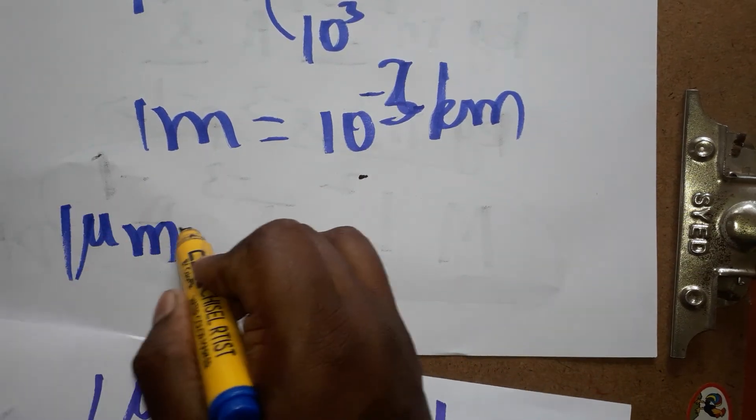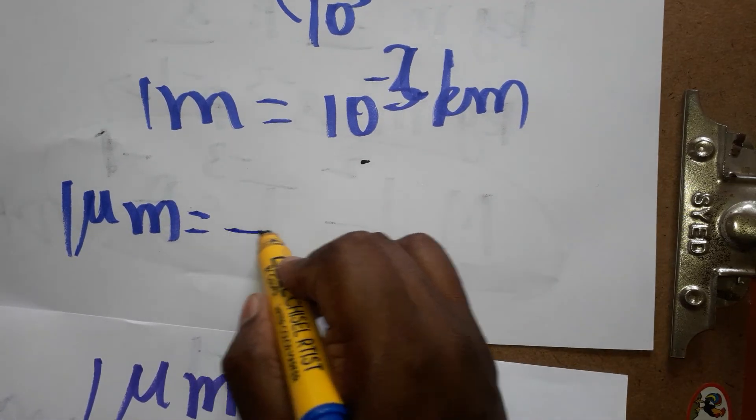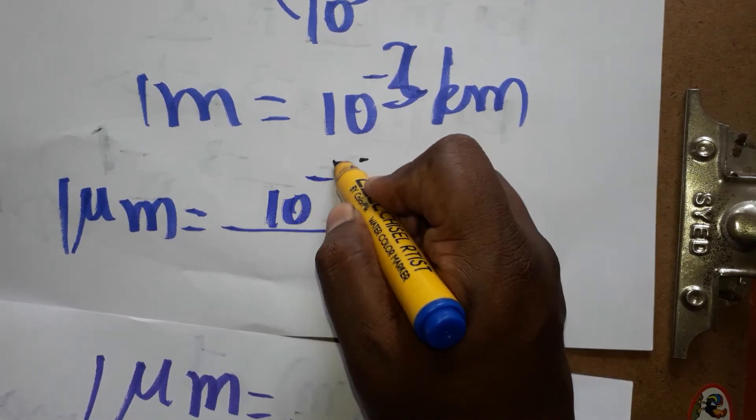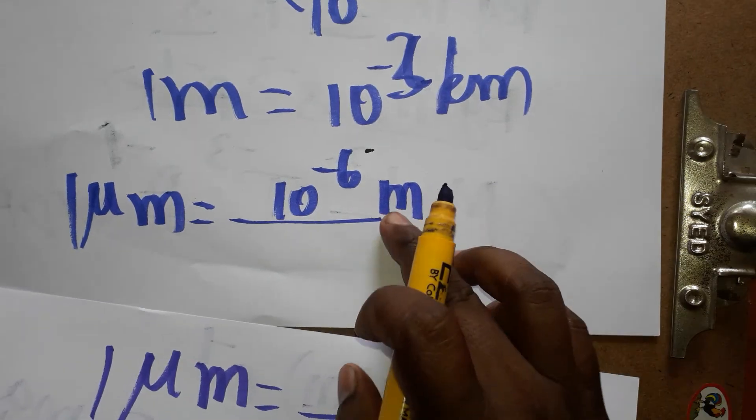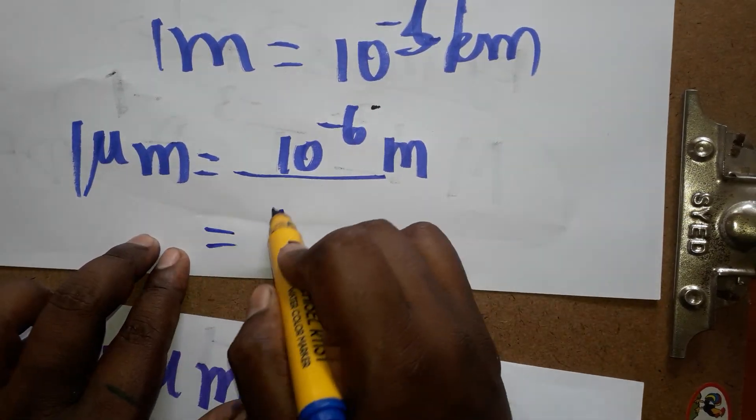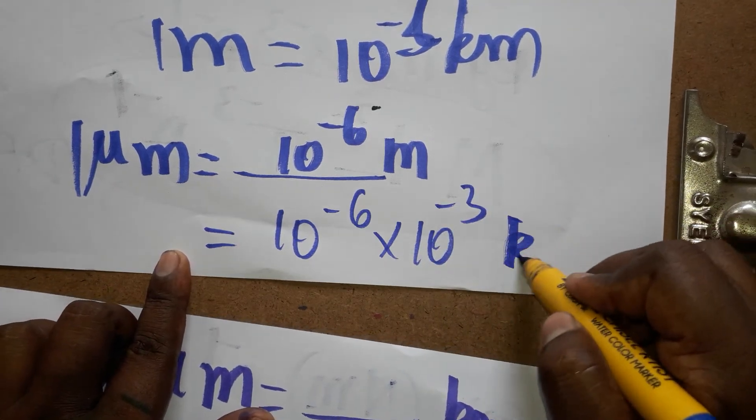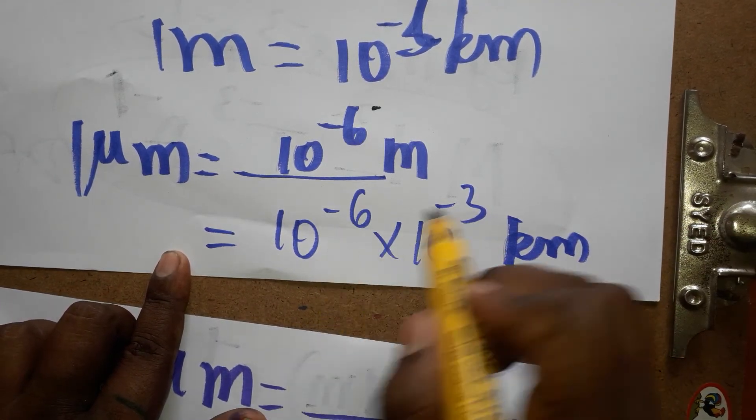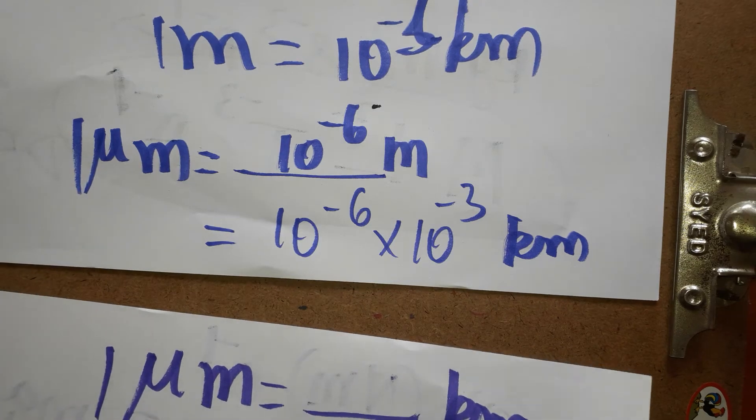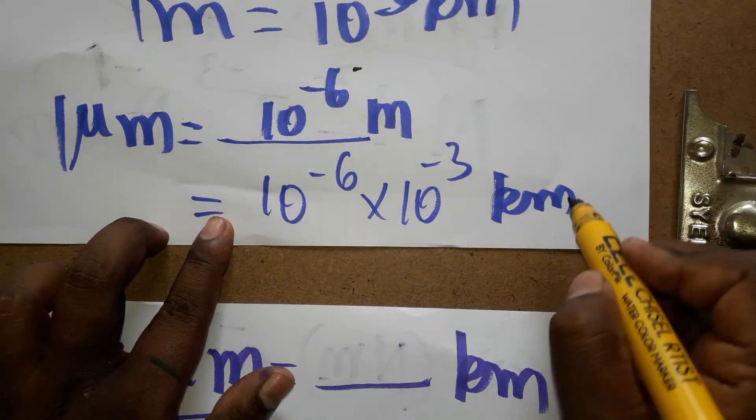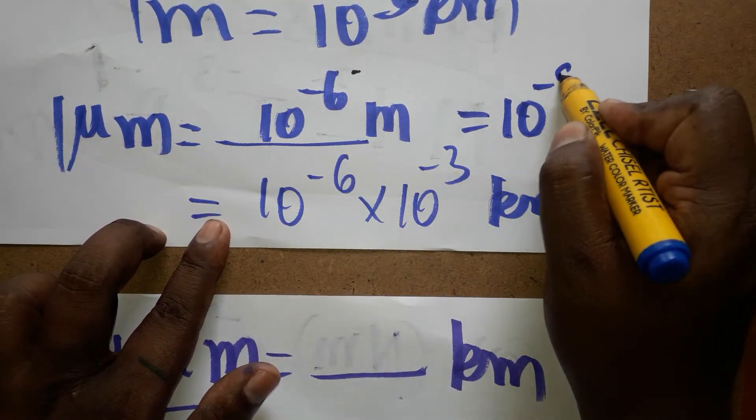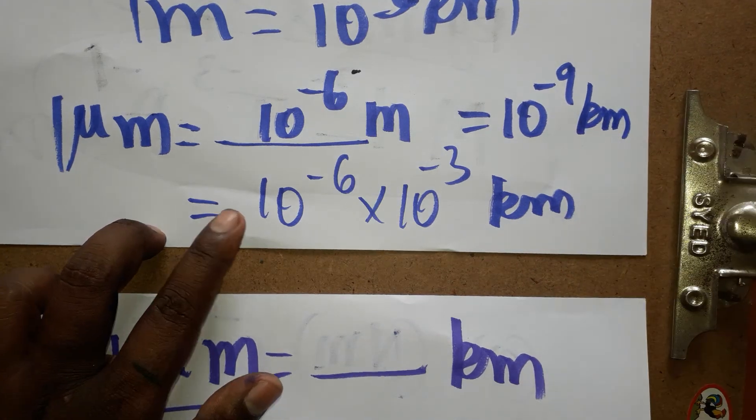Micrometer to meter: first we convert to meter, 10 power minus 6 meter. Then meter to kilometer: 10 power minus 3. So 10 power minus 6 into 10 power minus 3 kilometer. Minus 6 minus 3 will get as minus 9. So we'll get 10 power minus 9 kilometer.